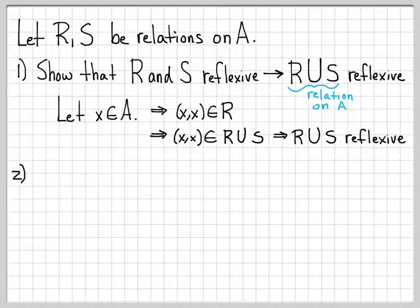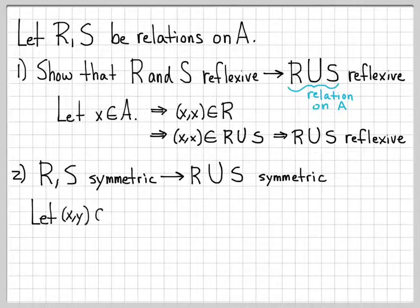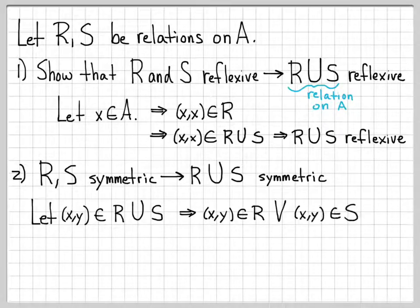Let's do part two: showing that when R and S are symmetric, R union S is symmetric. Let's pick an element (x, y) in R union S. By the definition of a union, that means (x, y) is in R or it's in S. We're going to break this into cases and show that no matter which case we're in, R union S is symmetric.